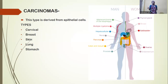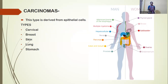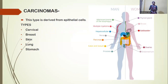In the case of carcinoma cancer, this type of cancer occurs in our epithelial cells. It occurs in epithelial cell layers of body parts such as cervical cancer, breast cancer, skin cancer, stomach cancer, renal cancer, and pancreatic cancer. When this type of cancer occurs, we call it carcinoma cancer.